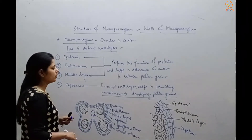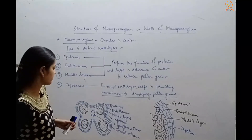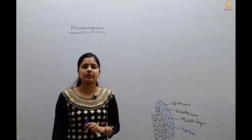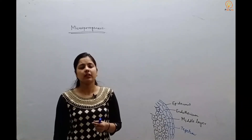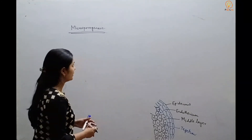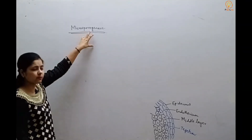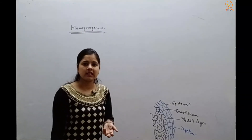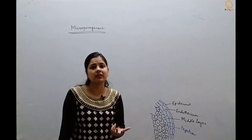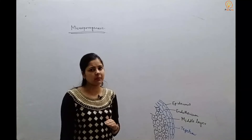That was about the wall of microsporangium. Next we will be dealing with the process of microsporogenesis. When we talk about microsporogenesis, as the word suggests, it is basically the process of formation of microspores. The 'genesis' part means formation — so microsporogenesis is the process of formation of microspores from pollen mother cells, or microspore mother cells.